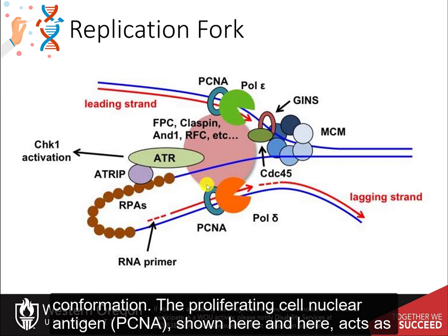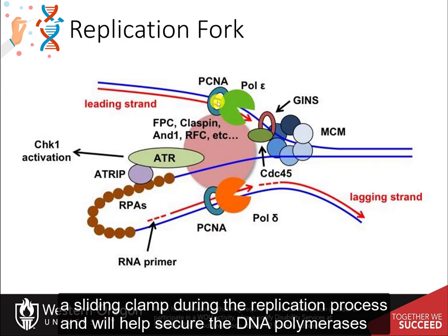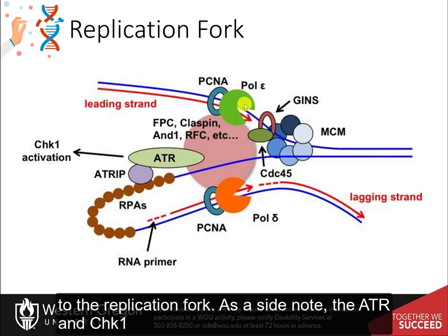The proliferating cell nuclear antigen (PCNA), shown here, acts as a sliding clamp during the replication process and will help secure the DNA polymerases to the replication fork.